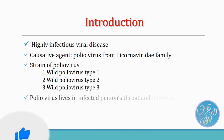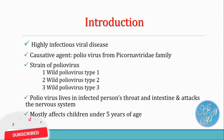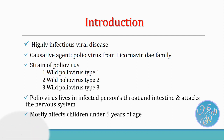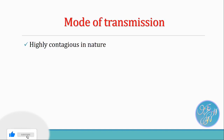Polio is very contagious and an infected person can spread the virus before and up to 2 weeks after symptoms appear to healthy individuals. The most common mode of transmission is through the fecal-oral route. However, less commonly it can be transmitted through droplets released during sneezing or coughing by an infected person.